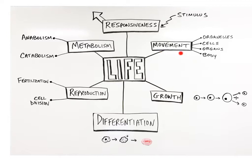The third life process is movement, which is the motion of the entire body or any of its parts, such as organs, cells, and internal cellular structures called organelles. The walls of many organs contain layers of smooth muscle, which can contract to propel substances through the organ. White blood cells can move out of the bloodstream and into surrounding tissues where an infection is occurring. Inside the cell, secretory vesicles can move to the cell's plasma membrane to release their chemical products.